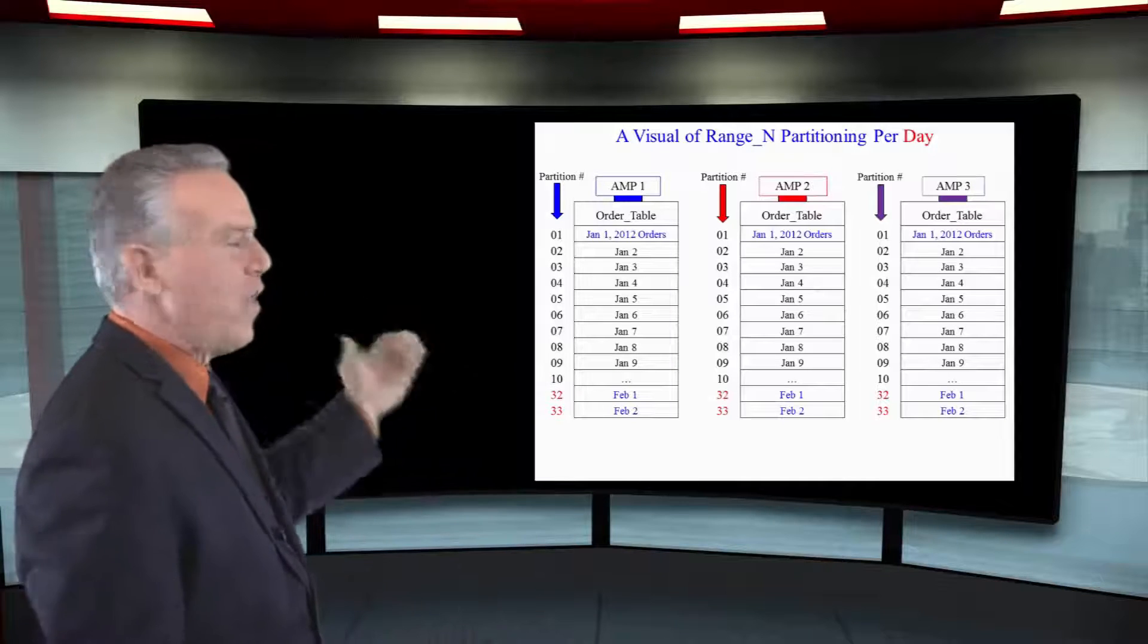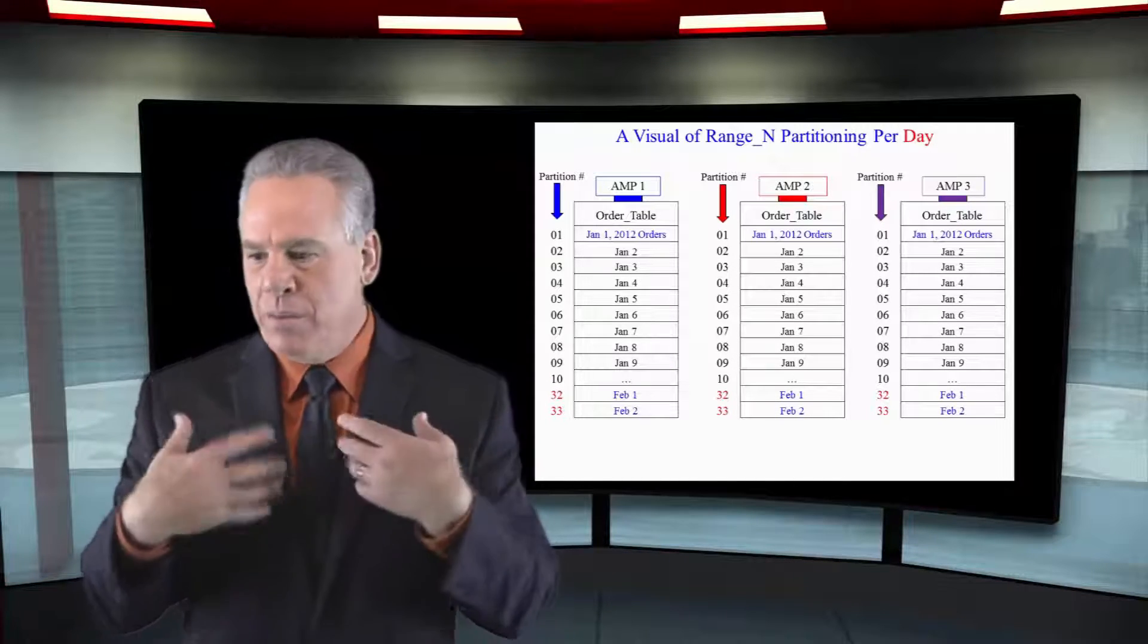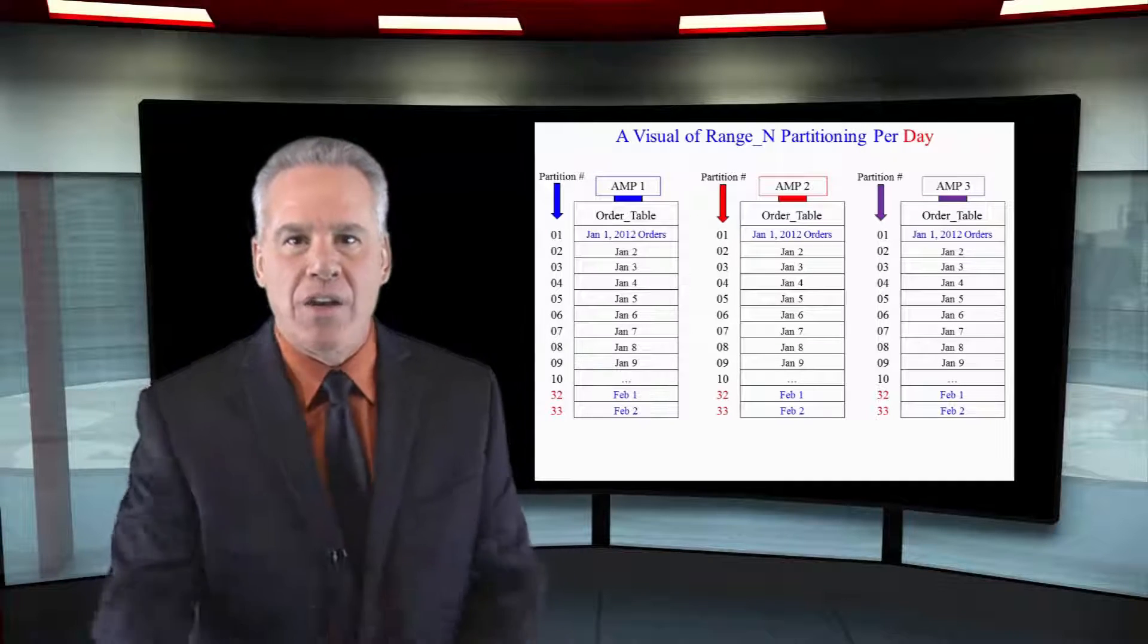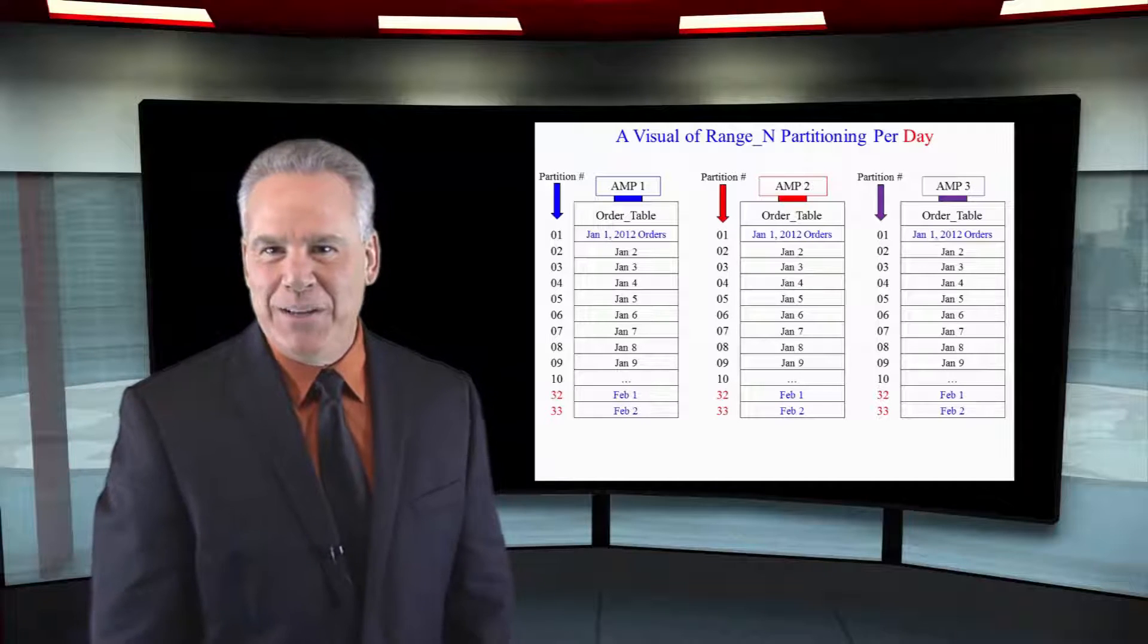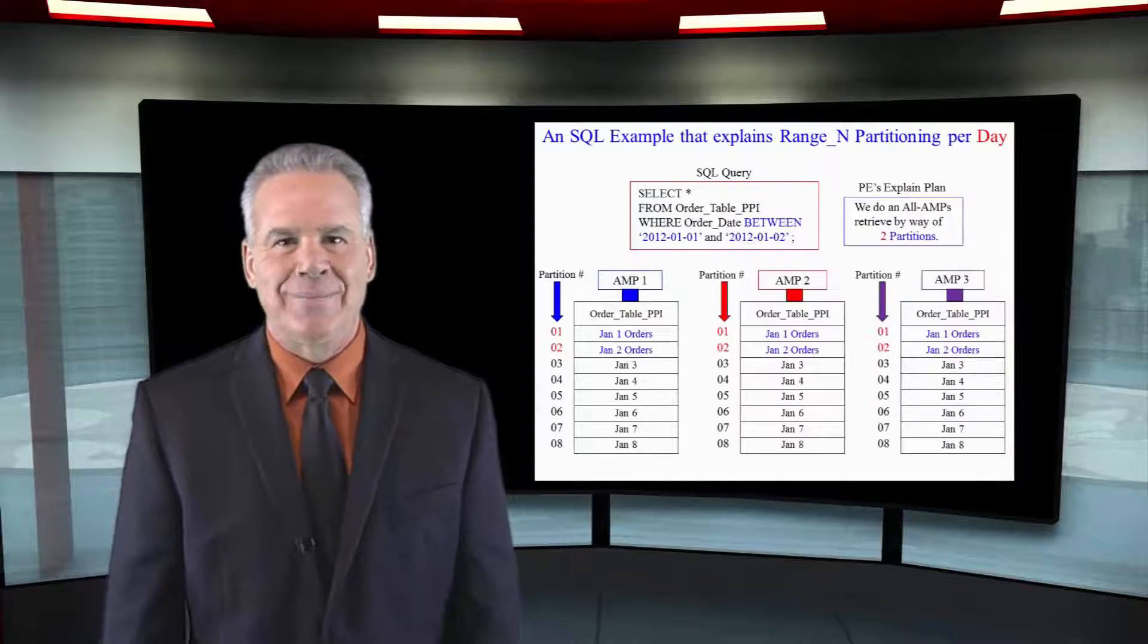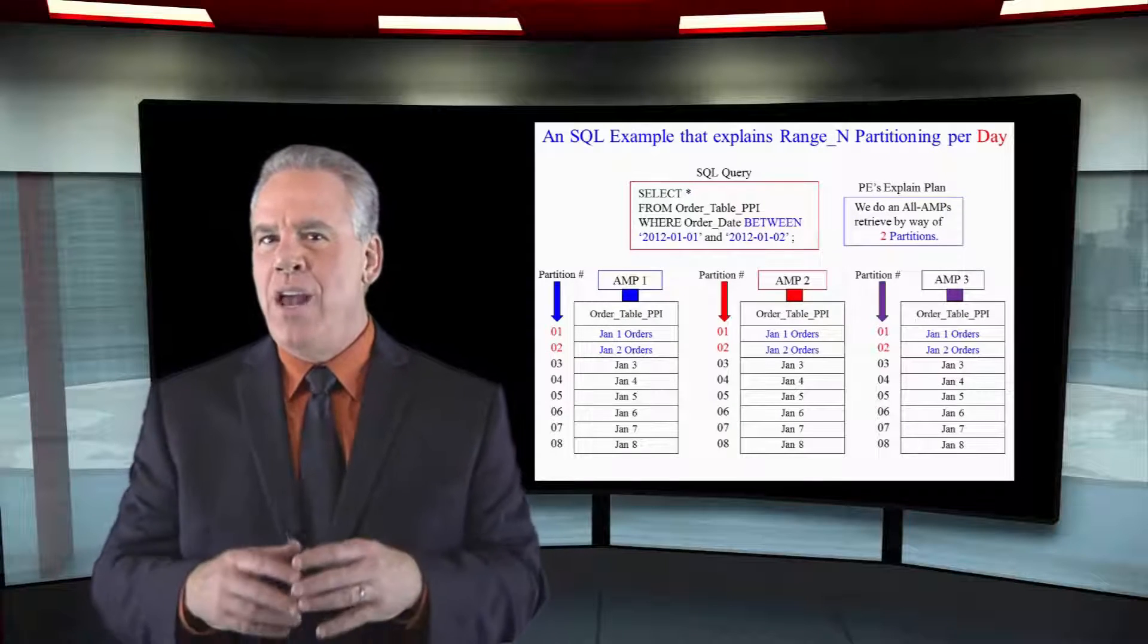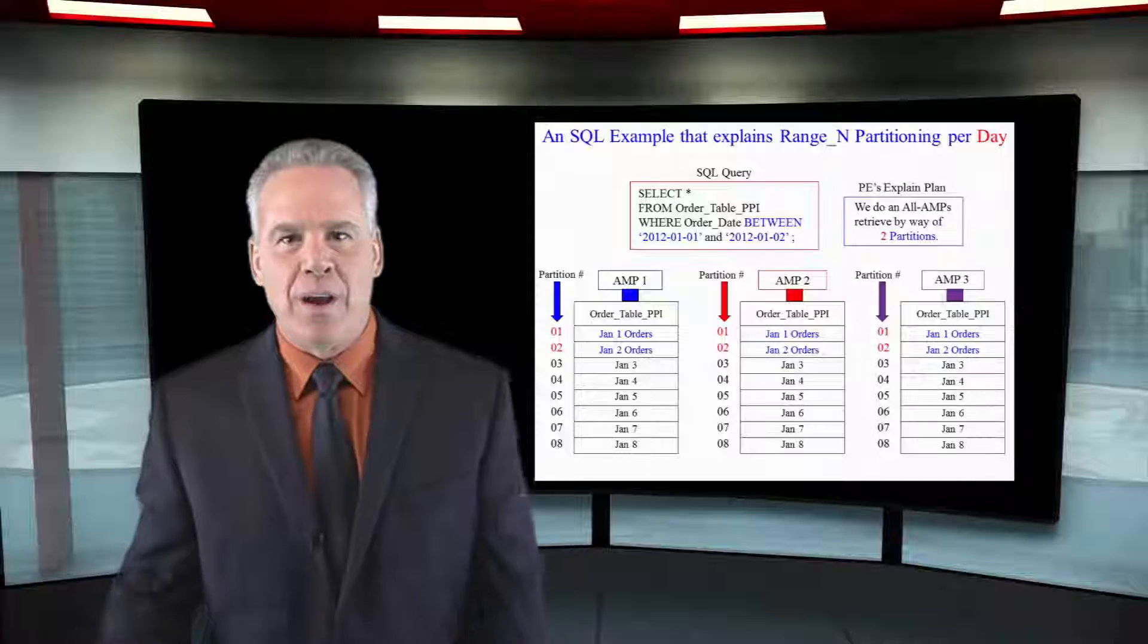You will have a much thinner partitioning scheme. Why would we do this? Well, somebody might say I want to know what happened on this particular date. Only one partition needs to be read on each AMP. Our query wants to know about all the orders that happened between January 1st and January 2nd, all AMPs retrieve by way of two partitions.